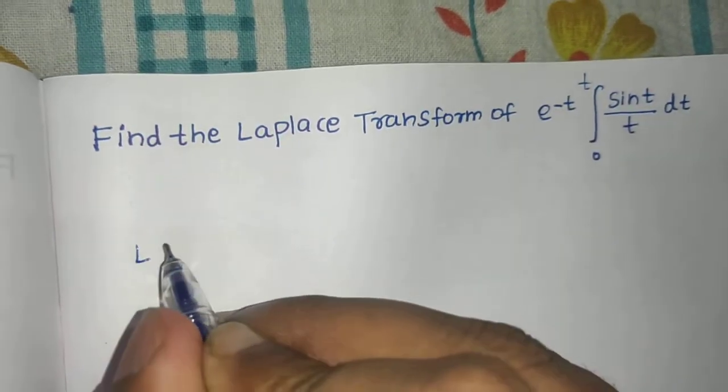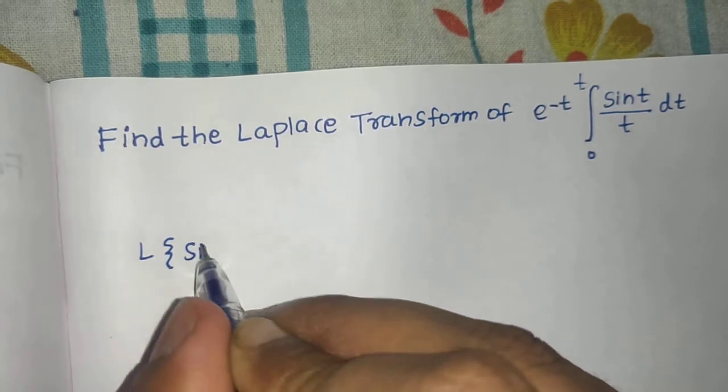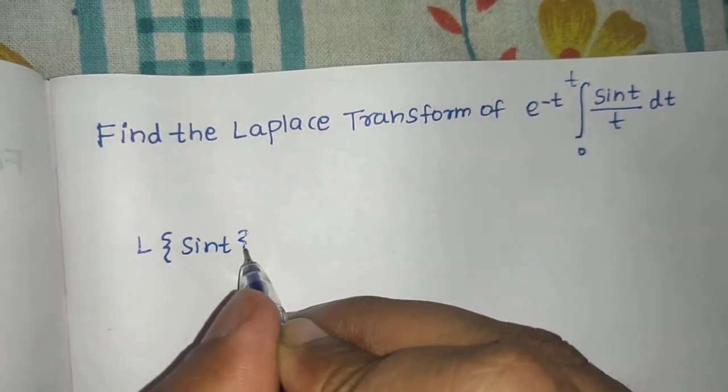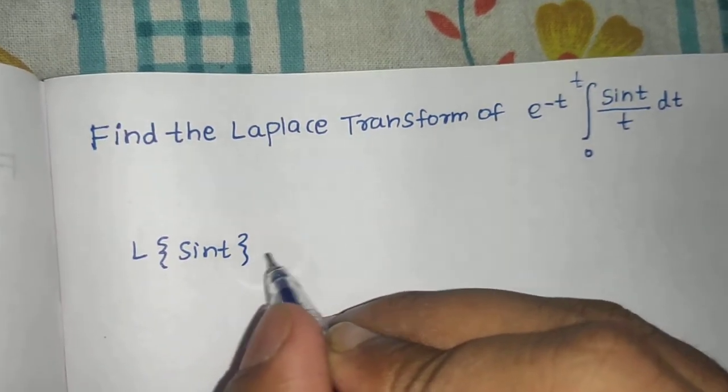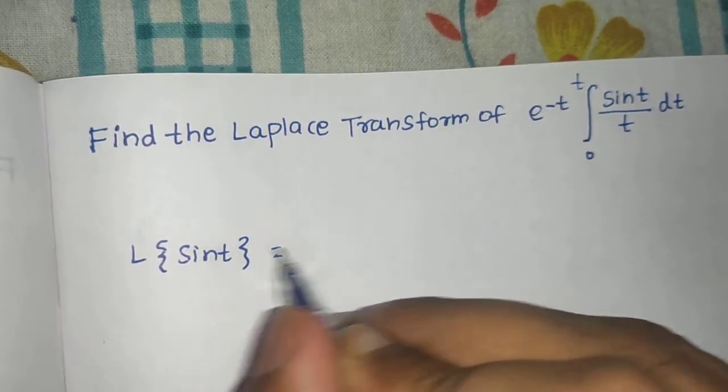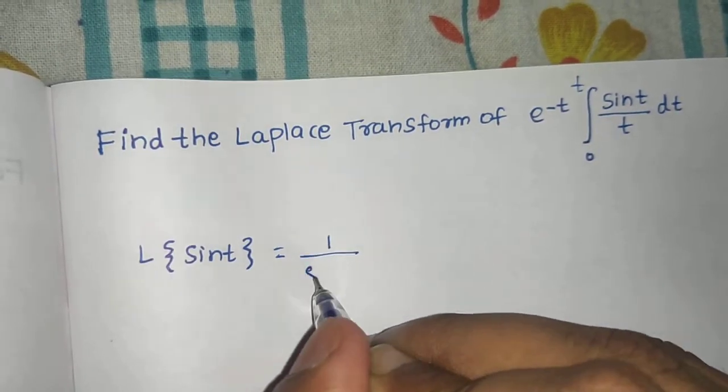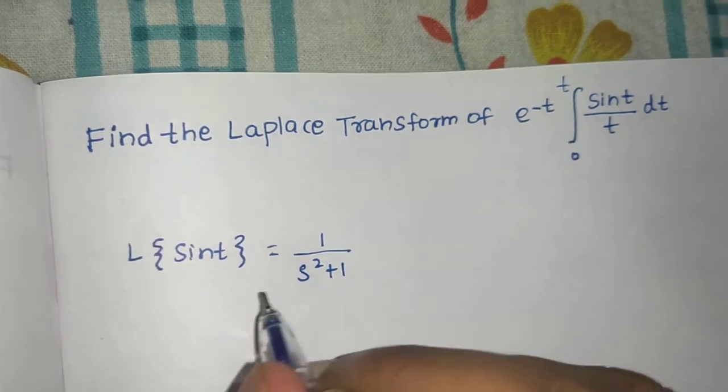First of all, we'll find the Laplace of sin t. We know that Laplace of sin(at) is a/(s² + a²). Here a is 1, so it will be 1/(s² + 1).